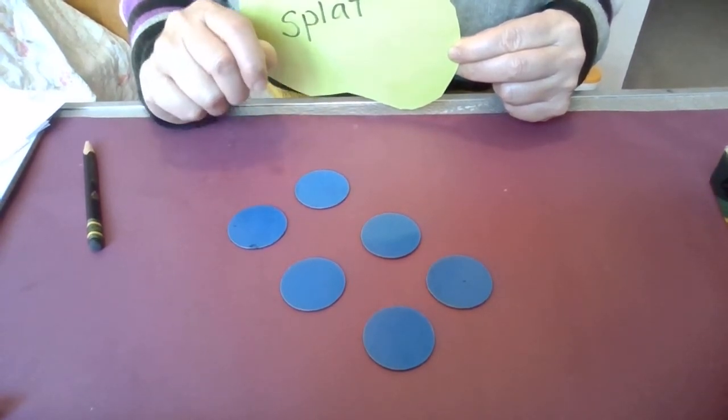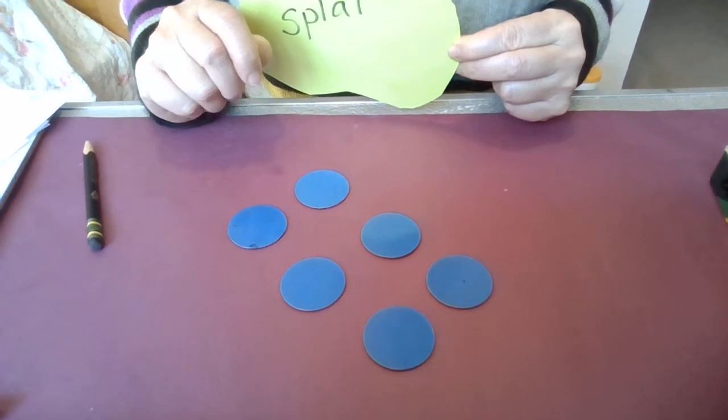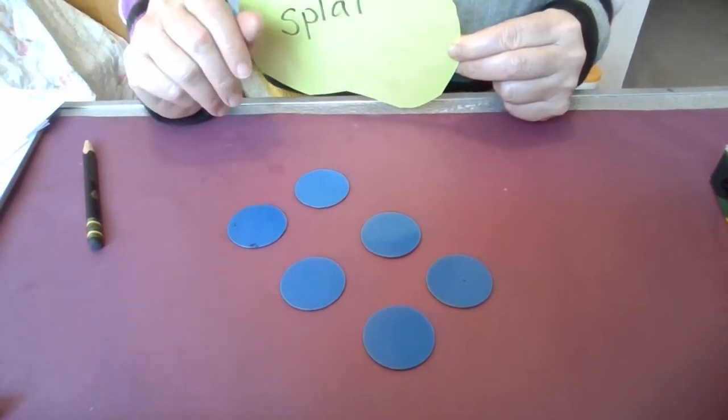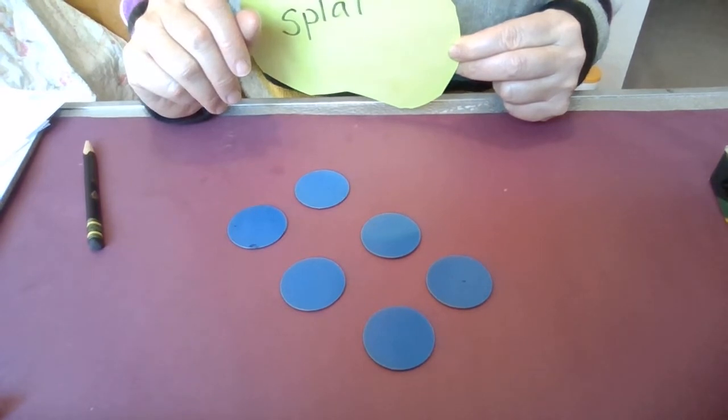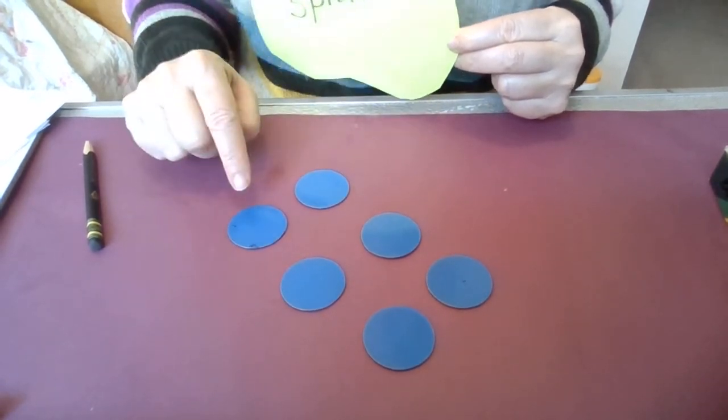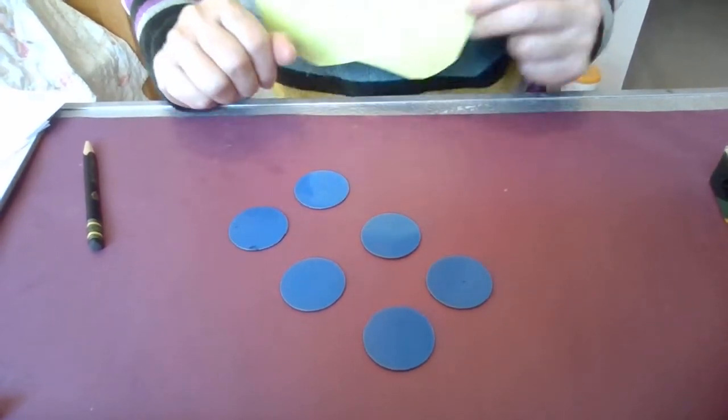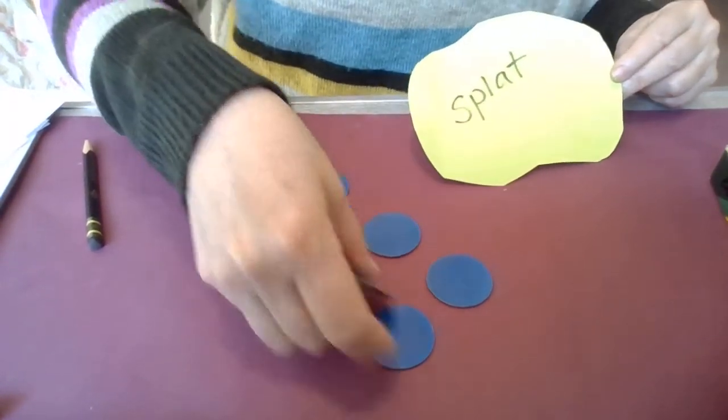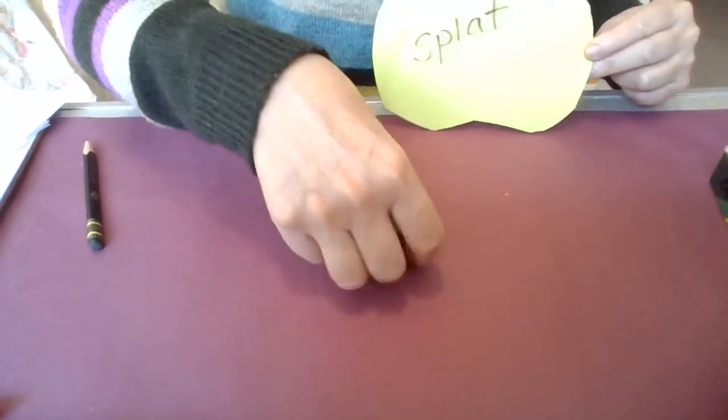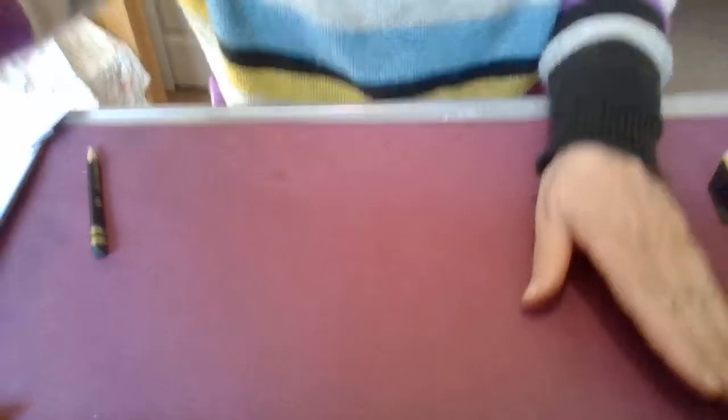But as you learn your numbers and you learn your number bonds and what are the two parts of a number, keep going up. Because our big goal for the end of first grade is that you could do that with a number like 15 or 16. Don't start there. It's not a competition. Start with six. Make sure you're solid in your low numbers, because if you're solid in your low numbers, you're going to be solid as you get into the higher numbers.